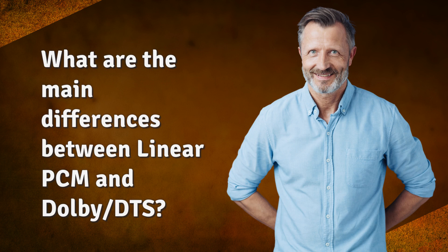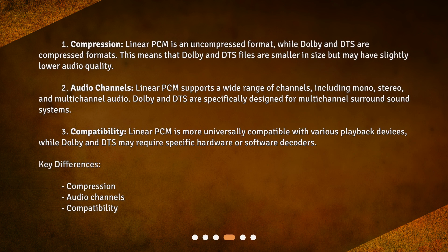What are the main differences between Linear PCM and Dolby DTS? First, compression: Linear PCM is an uncompressed format, while Dolby and DTS are compressed formats, meaning Dolby and DTS files are smaller in size but may have slightly lower audio quality. Second, audio channels: Linear PCM supports a wide range of channels including mono, stereo, and multi-channel audio, while Dolby and DTS are specifically designed for multi-channel surround sound systems. Third, compatibility: Linear PCM is more universally compatible with various playback devices, while Dolby and DTS may require specific hardware or software decoders.